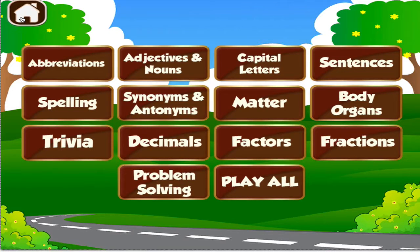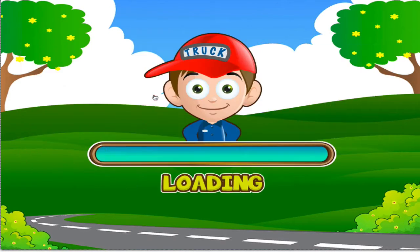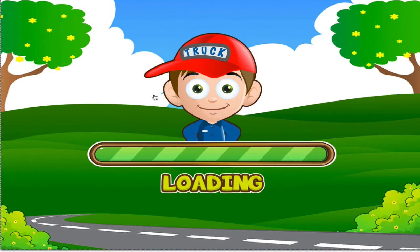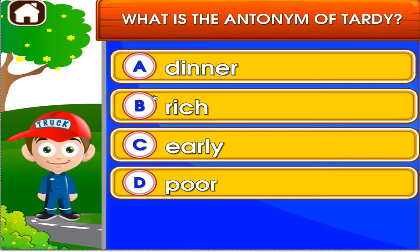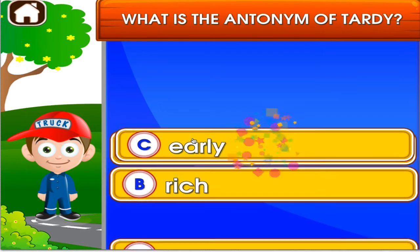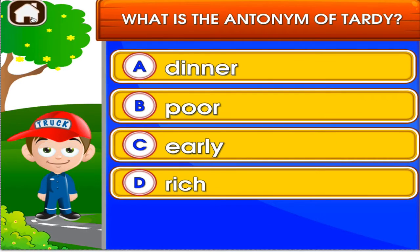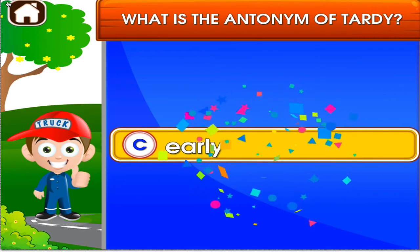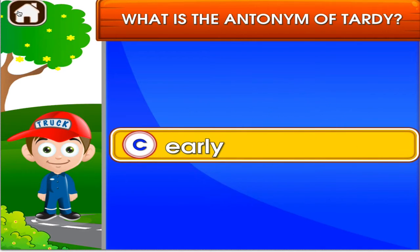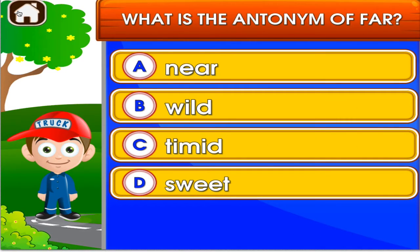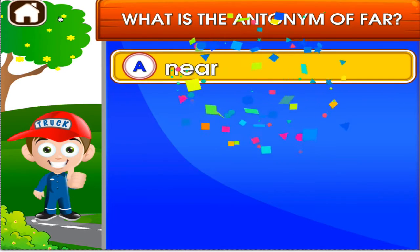Choose the activity you want to play. Synonyms and antonyms. Tap the correct answer. You're really good at this. Tap the correct answer. You're really good at this. Tap the correct answer. Superb!